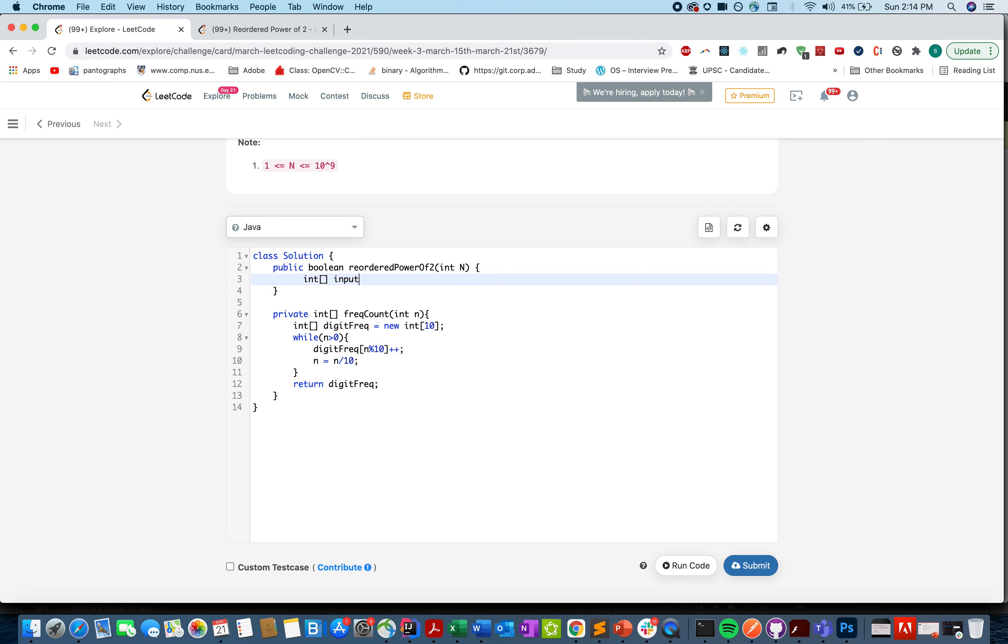Pretty simple. Let's calculate it for the input. digitFrequency equals freqCount and you pass n there. For integer i equals 0, i is less than 31, i plus plus. How many powers of 2 we are interested in generating? 32 powers. Let's generate powerOf2Number and that would be equal to Math.pow 2 comma i. The return type for this is double, so let me just cast it into int. Let's generate the frequency count for this number as well. I'll pass powerOf2 here and this would be powerOf2FreqCount. Now we need to simply compare these two arrays.